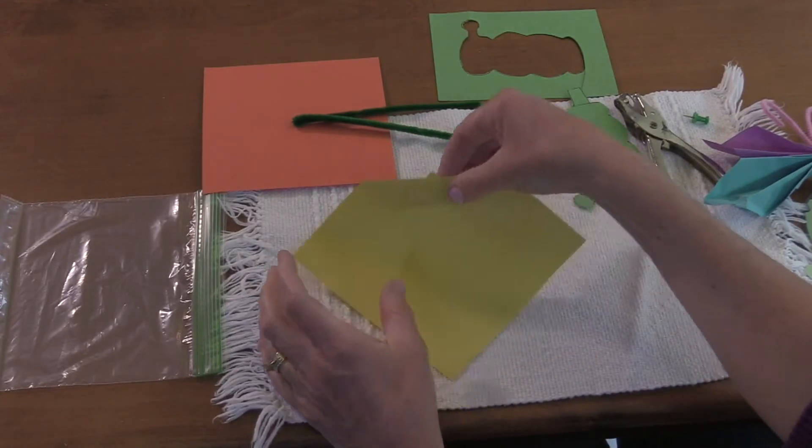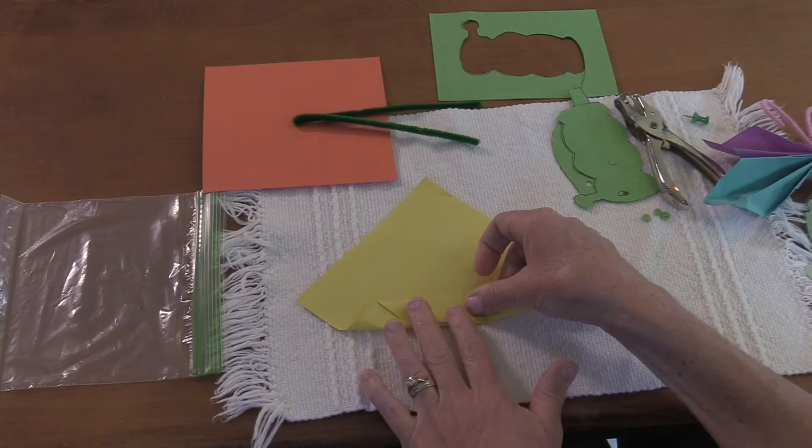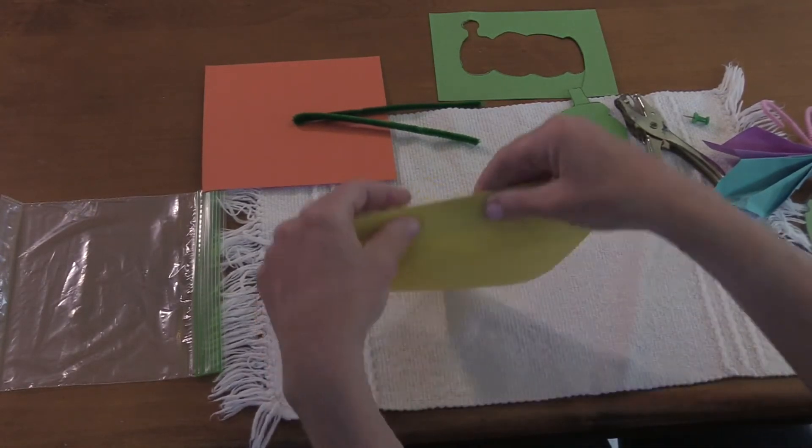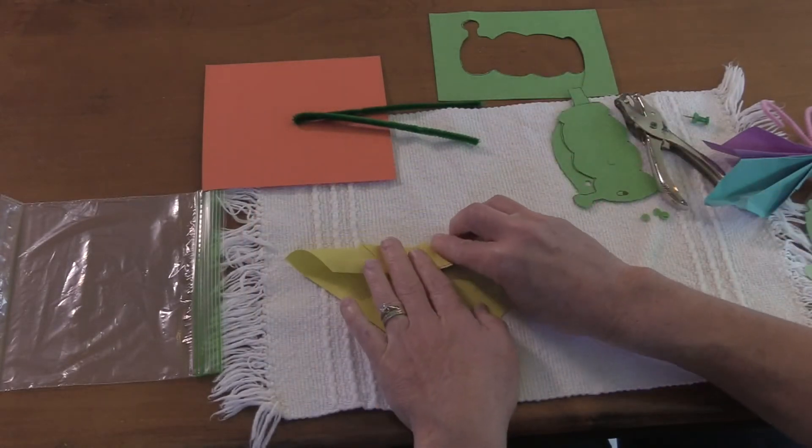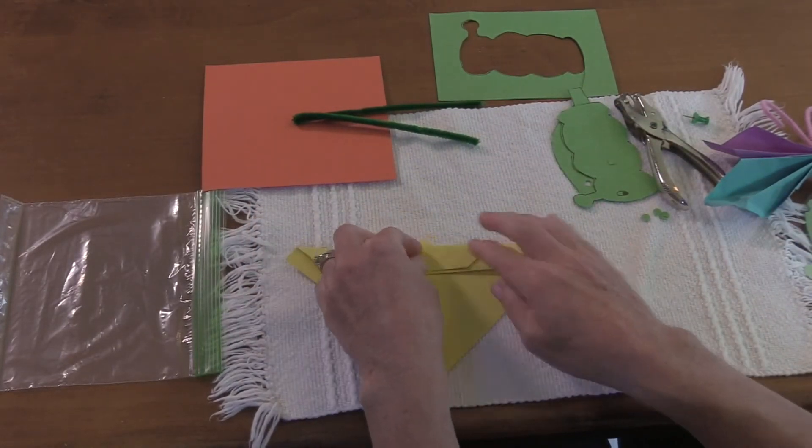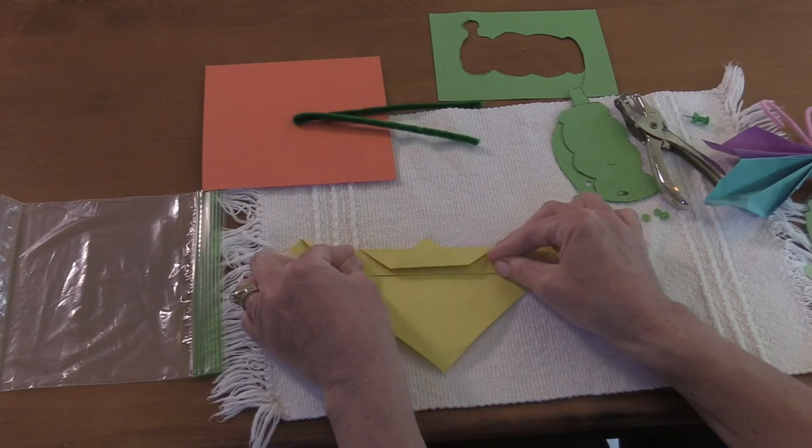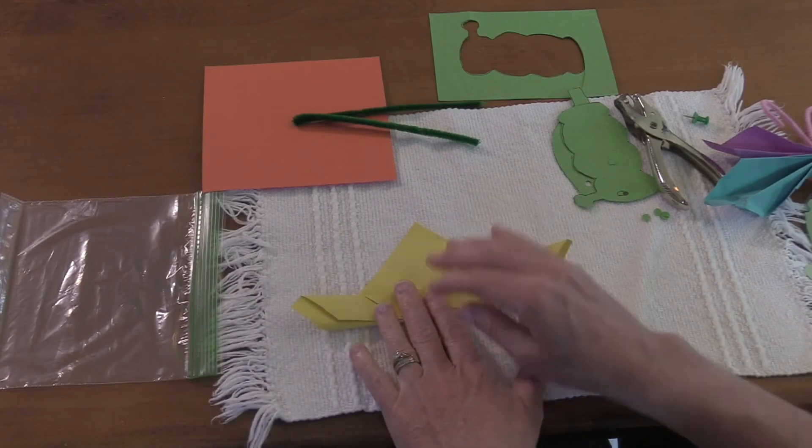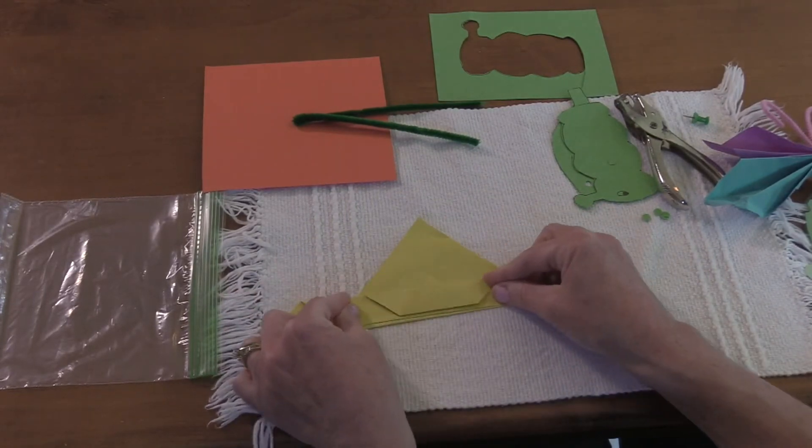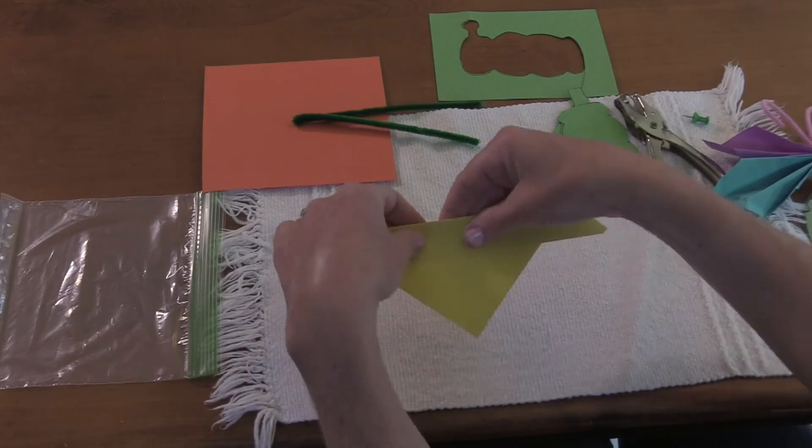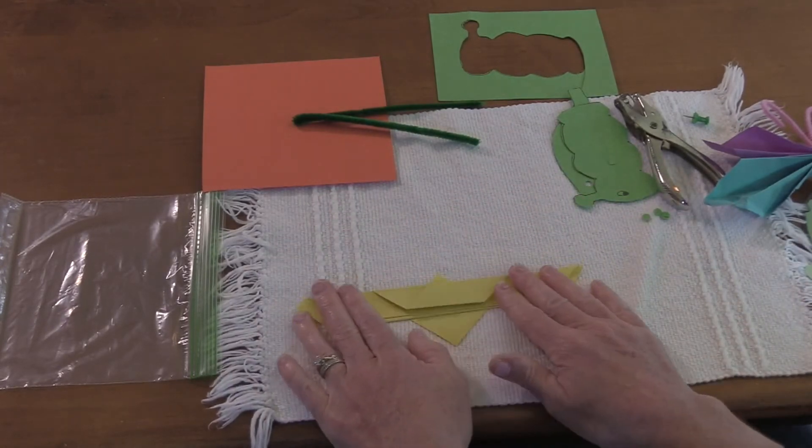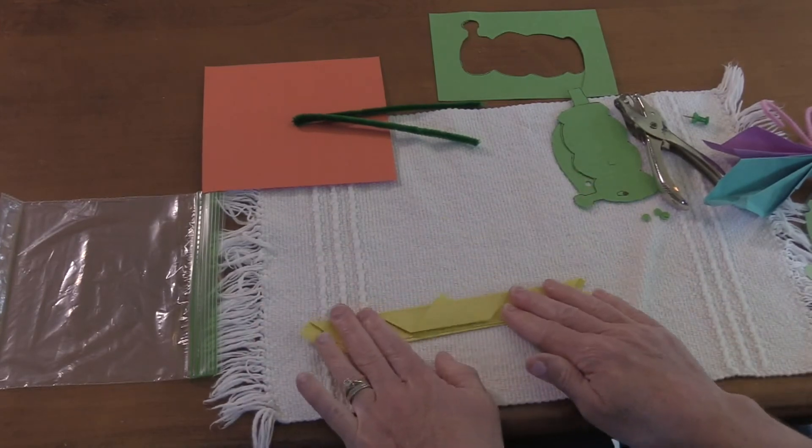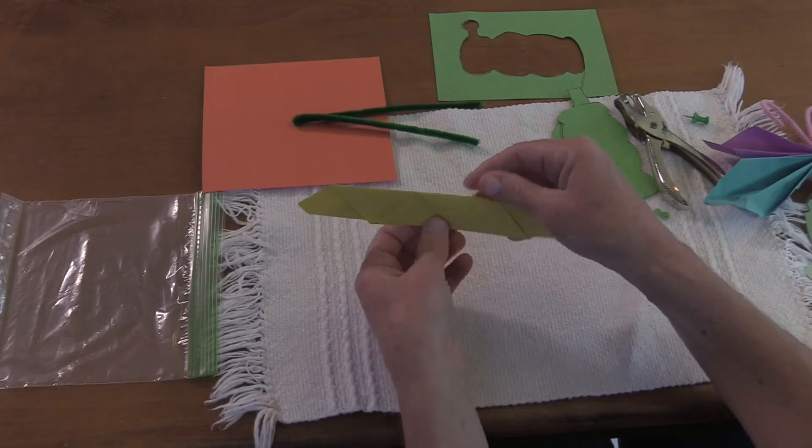Then you fold it again. You turn it over, fold it again using my muscles and pressing very hard so that the paper stays folded. And now I have done one of the butterfly's wings.